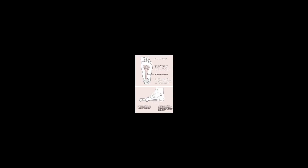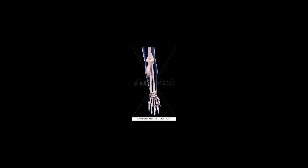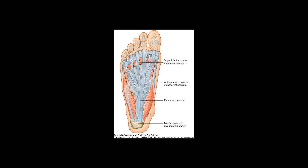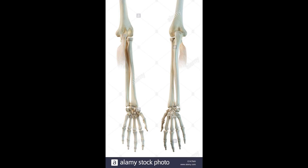The primary regions with thicker aponeuroses are in the ventral-abdominal region, the dorsal-lumbar region, the ventriculus in birds, and the palmar and plantar regions.